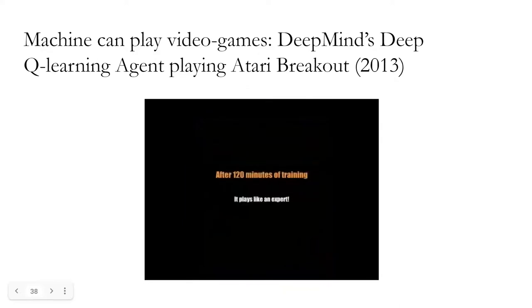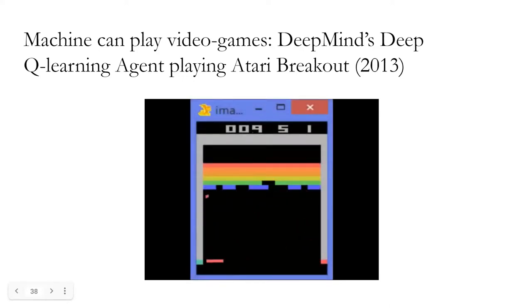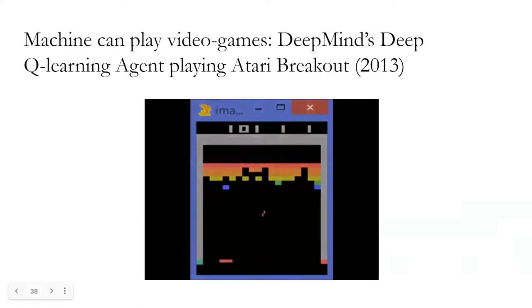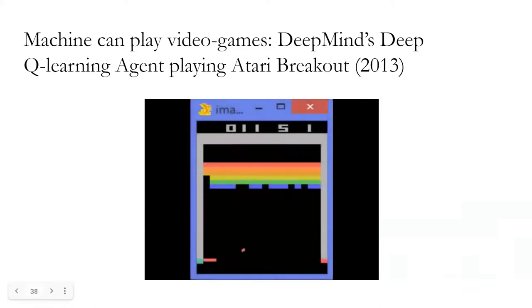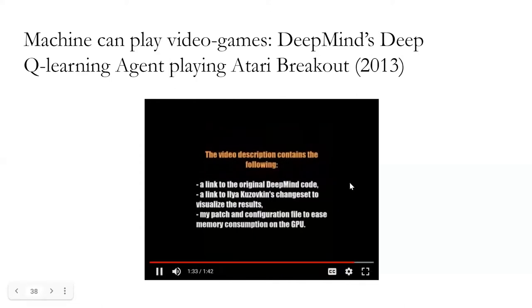Now this is after 120 minutes of training and you can see that the agent is already doing a good job. After 240 minutes of training, you see that the system actually figured out how to solve this game in a smarter way, which a lot of us do. You just try to hit one column completely so that you can go inside and start solving it from the top so that it's easier. This is a really cool demonstration of what is possible with the state-of-the-art systems.